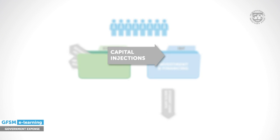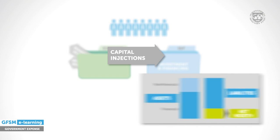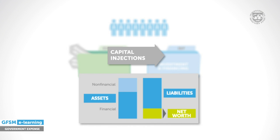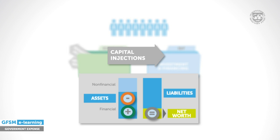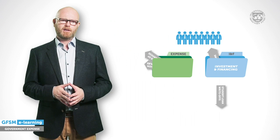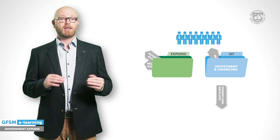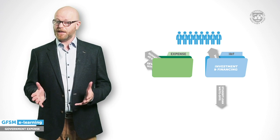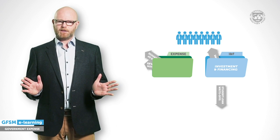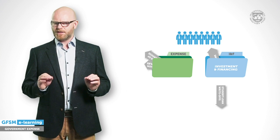The capital injection into the public corporation also stirs some debate. Some argue that this leads to a cash outflow and therefore a decrease in assets, so an expense should be recorded. Others argue that while cash is reduced, other assets increase because the share of equity in the corporation is rising. They maintain that this exchange of assets leaves net worth unchanged and a financial transaction should be recorded. Cases like this are not always clear cut. The staff must determine whether the capital injection is a gift to be recorded as an expense or an investment not recorded as an expense. GFSM offers detailed guidance.